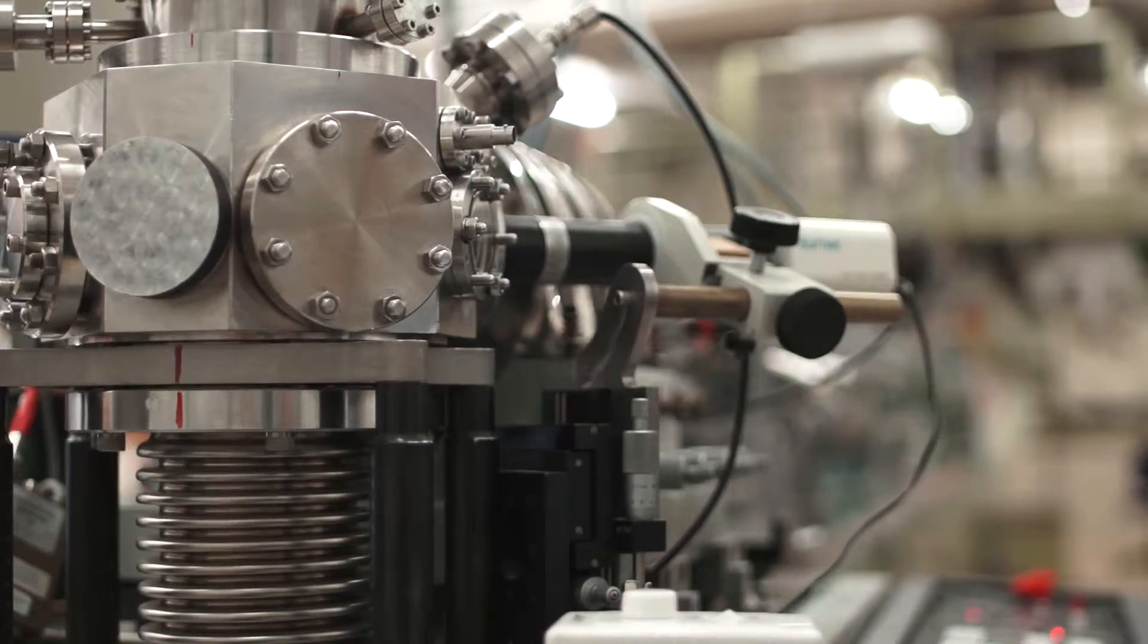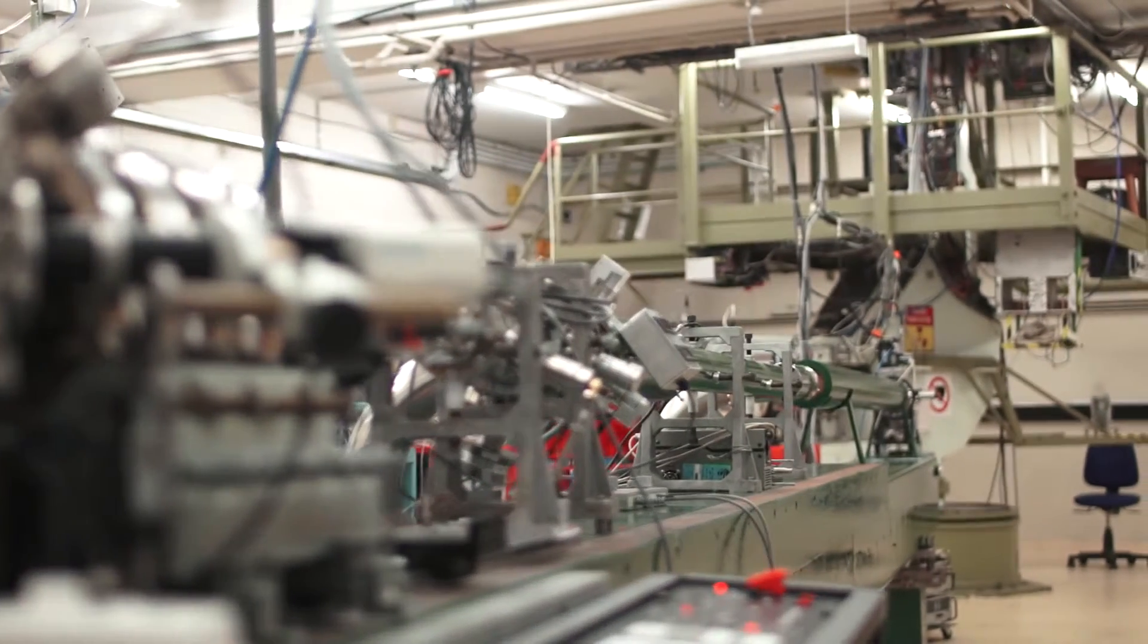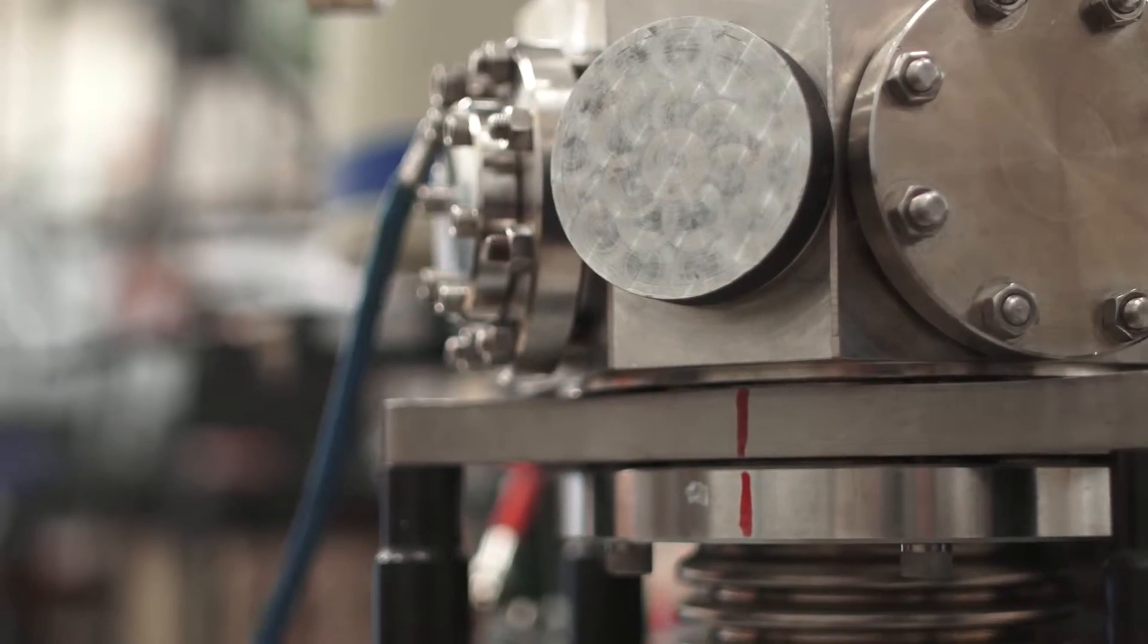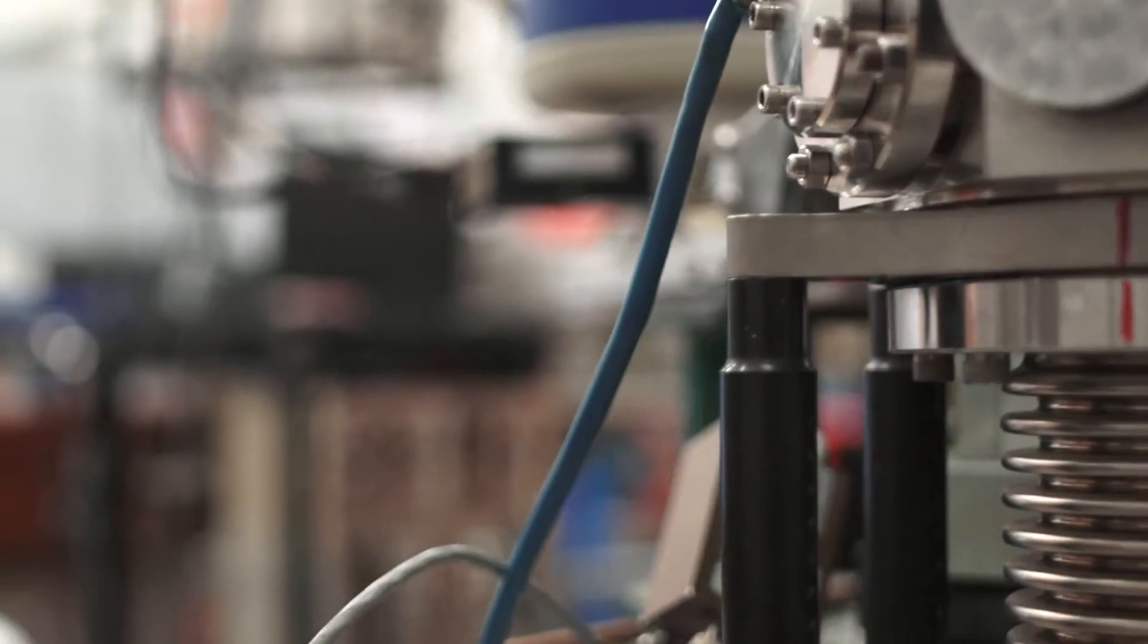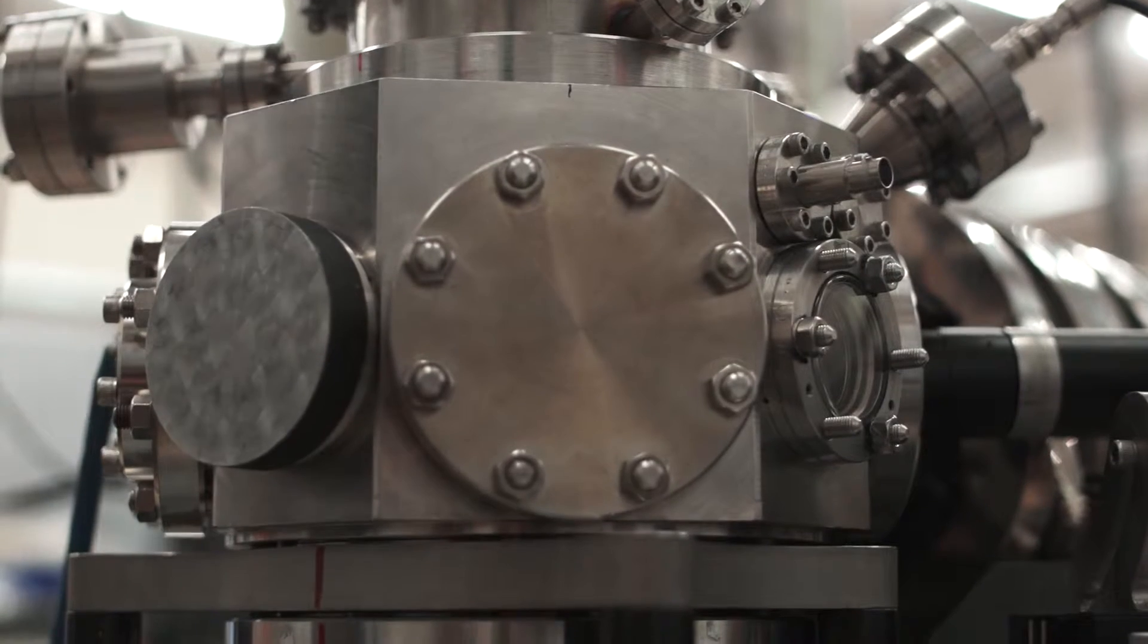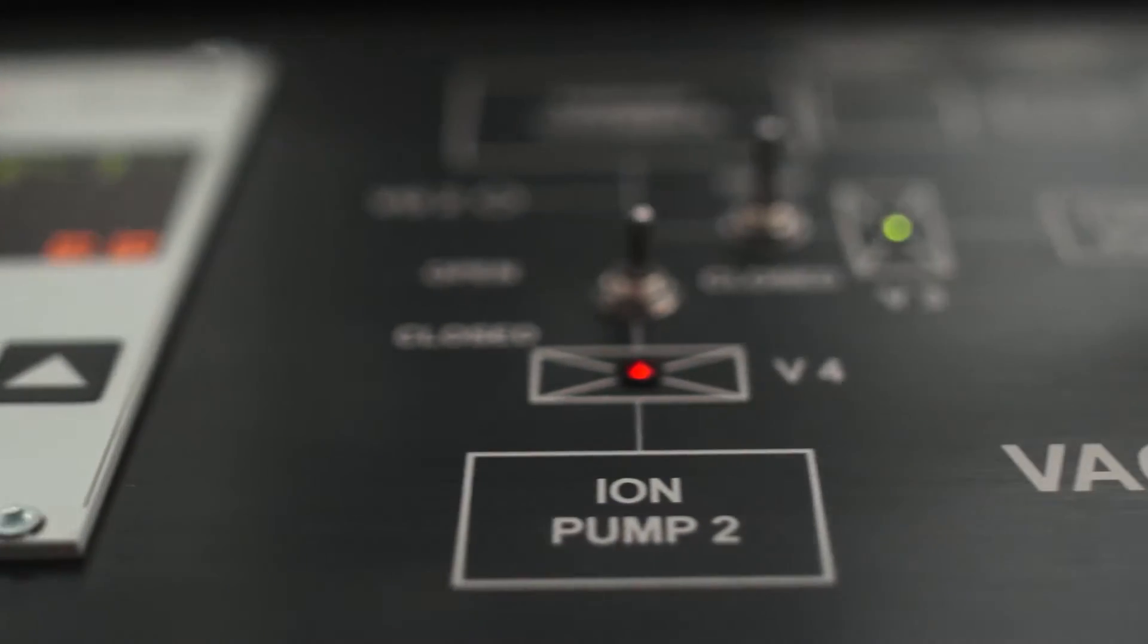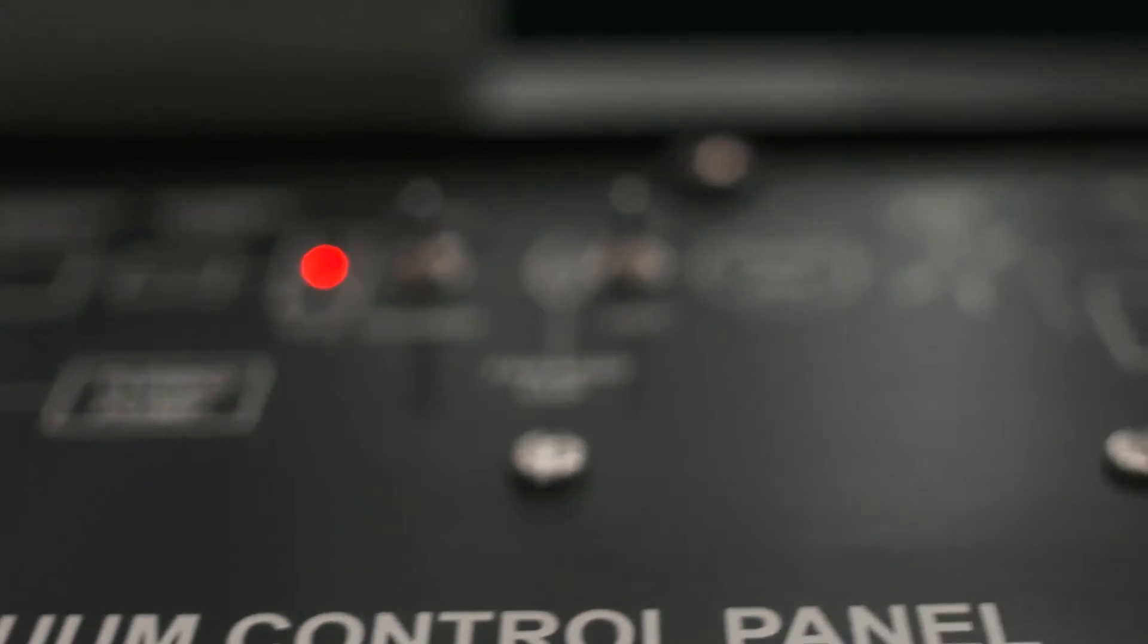Researchers from both condensed matter groups are part of the Centre of Excellence for Quantum Computation and Communication Technology. This centre is spread across Australia over six university campuses. Our focus here is to build a quantum computer based on silicon. The encoding that we use is phosphorus atoms in the silicon lattice.